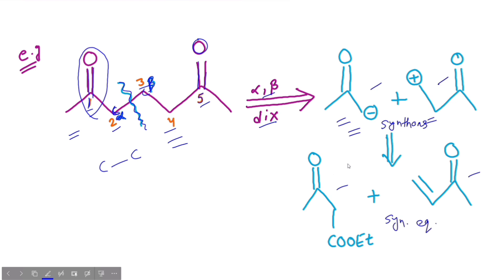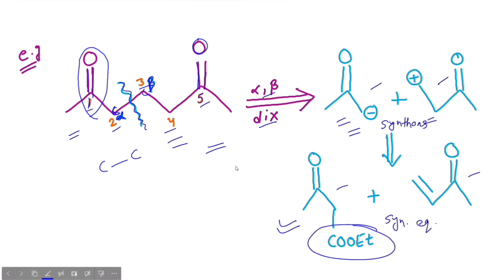Regarding the activating group: the activating group that will be used is the ester group, which you will see on this particular carbonyl compound. This was our example explaining the key points. Now let's discuss examples covering retrosynthesis and synthesis.